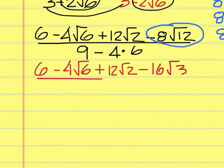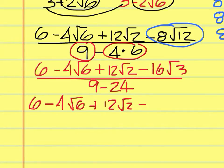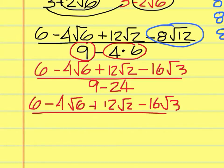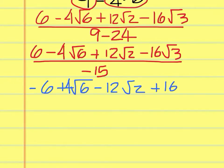On the bottom, you have 9 minus 24. On the top there doesn't appear to be much more we can do. On the bottom, 9 minus 24 is negative 15. We cannot have a negative number in the denominator, so we're going to change the sign of everything to get negative 6 plus 4 square root of 6 minus 12 square root of 2 plus 16 square root of 3, all over 15.